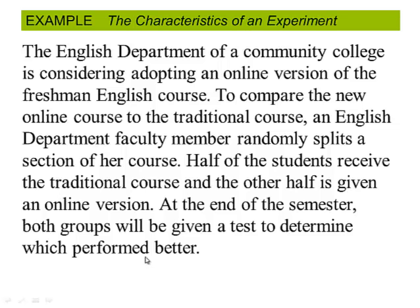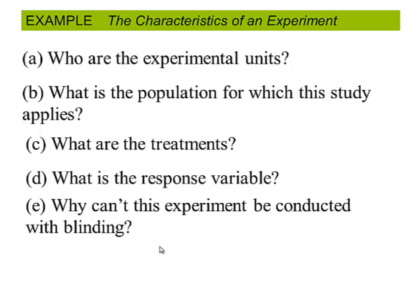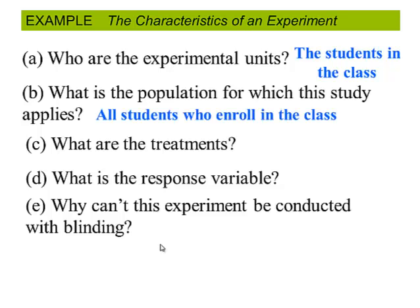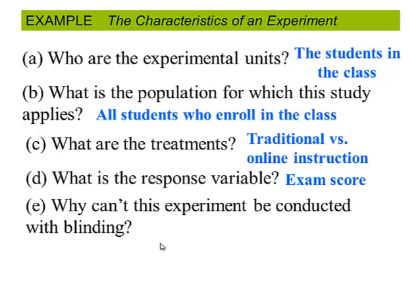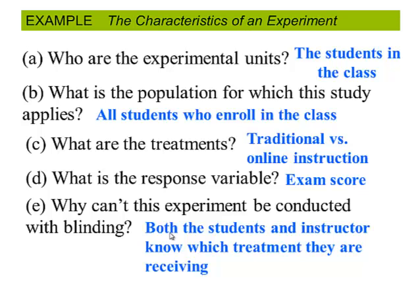The English Department of a Community College is considering adopting an online version of the freshman English course. To compare the new online course to the traditional course, an English Department faculty member randomly splits a section of her course. Half the students receive the traditional course and the other half are given an online version. At the end of the semester, both groups are given a test to determine which performed better. This is a designed experiment because there's a treatment group and a control group. The experimental units are the students in the class. The population is all students enrolled in that English course. The treatments are traditional versus online instruction. The response variable is how well they do on the exam. This cannot be done with blinding because both the units and the instructors know which treatment they are receiving.